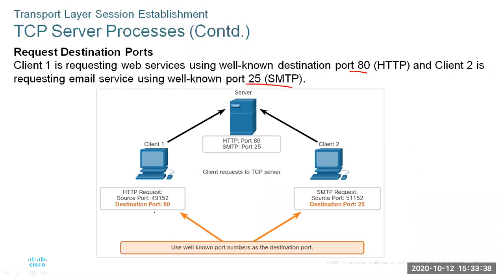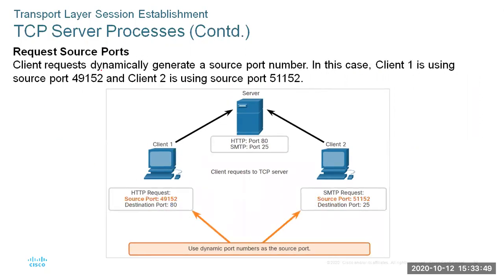The ports 80 and 25 are well-known ports — one for mail and one for web. Clients request dynamically generated source port numbers, while the port on the server is static. For every service a PC is going to request, it generates a new dynamic port number. If the same client requesting web service also requests mail service, it will use a different dynamic port number as the source.